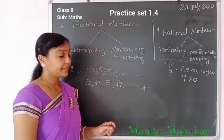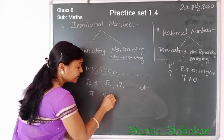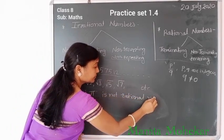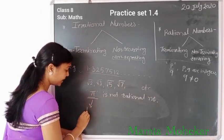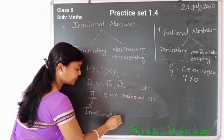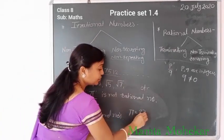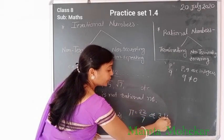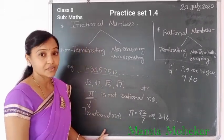One important thing to remember: pi is not a rational number. Pi is called an irrational number. We use the value of pi as 22 by 7 or 3.14 and so on, but it is called an irrational number.